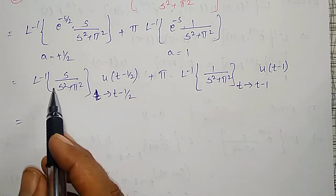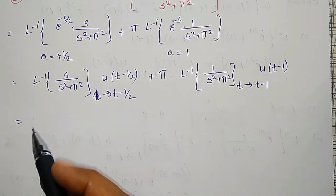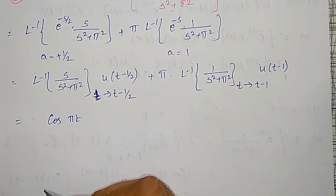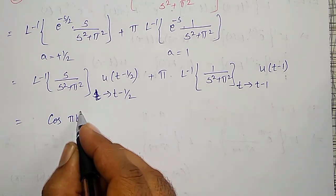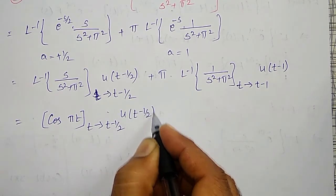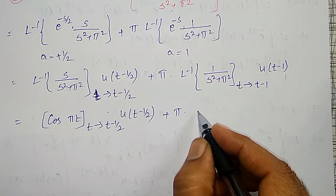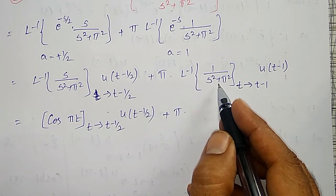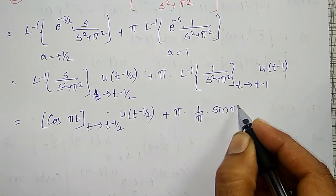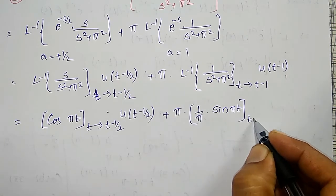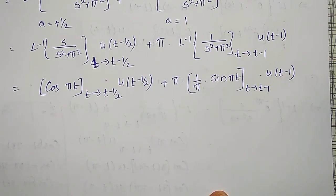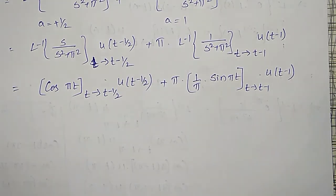Therefore, the inverse Laplace Transform of s divided by s squared plus pi squared is cos(pi t). Its inverse Laplace Transform is cos(pi t). In this, t is replaced by t minus 1 over 2, into u(t minus 1 over 2). Plus pi into: the inverse Laplace Transform of 1 divided by s squared plus pi squared is 1 over pi times sin(pi t). In this, t is replaced by t minus 1, into u(t minus 1). Pi and pi cancel. Let us substitute t by t minus 1 over 2, and t by t minus 1 in this.